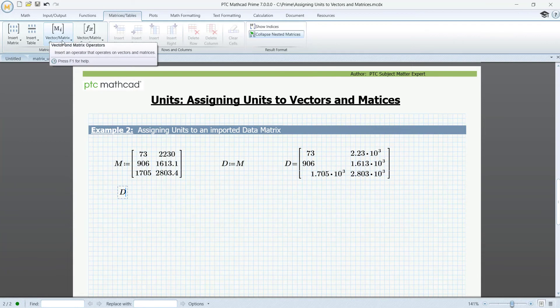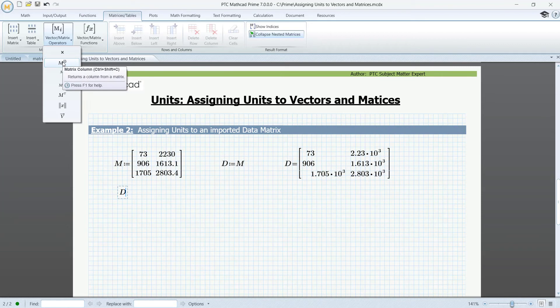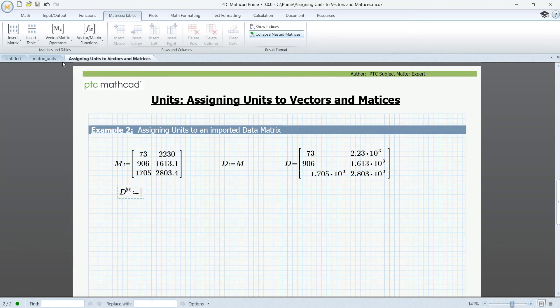Let's see how. Go to vector matrix operators, choose matrix column, select the first, colon, equal, D, and now I'll use the shortcut, control, shift, C, and then the unit millimeters.